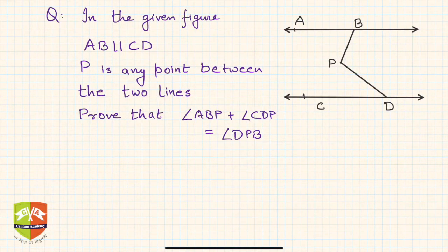In the given question, it has been given that AB is parallel to CD, and P is any point between the two lines. So these two lines are parallel, and P here is a point between them.